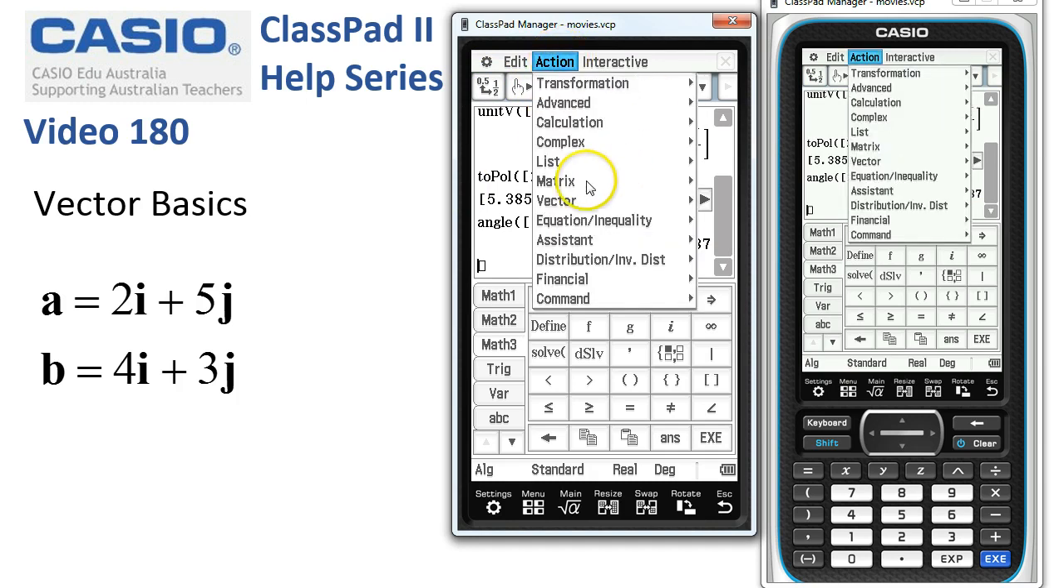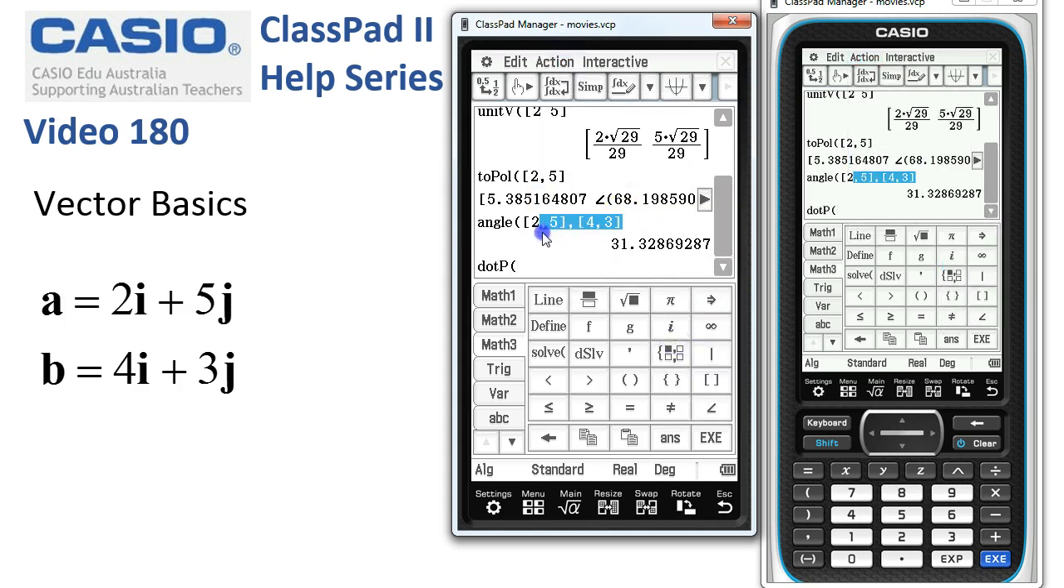Similarly, we could carry out a dot product the same way. So if we wanted a dot product of these two vectors, I'll just copy them down and tap execute. The dot product is 23.